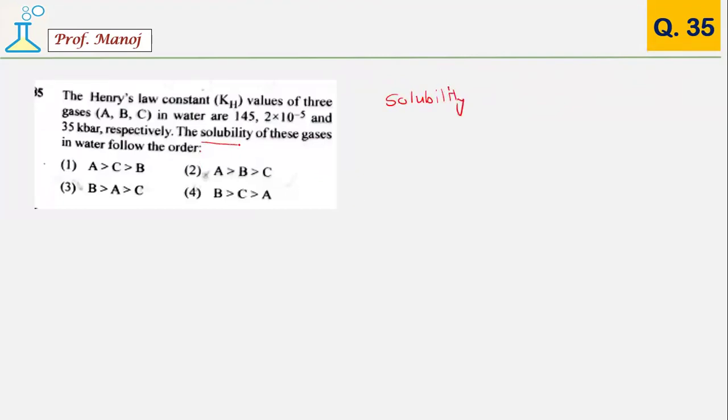They are asking about solubility of a gas. To find that, they have given Henry's law constant. A simple relation exists: solubility of a gas is inversely proportional to KH. You can clearly see 145A has the highest KH value, it will be least soluble, followed by gas with 35 kilobar which is C, followed by 2 into 10 raised to minus 5, that is B. The answer should be 4.